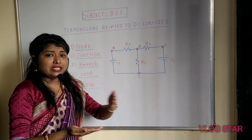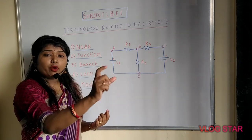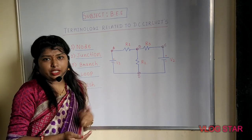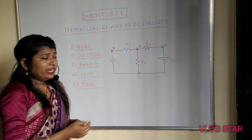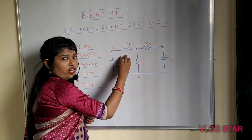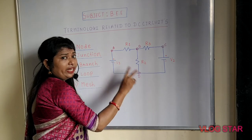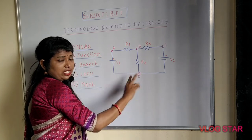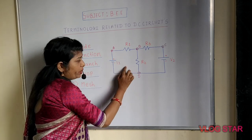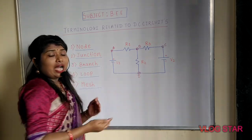What is the basic difference between loop and mesh? Mesh is one form of the loop which cannot be further divided into further loops. In this particular circuit, there are two meshes and three loops — this would be mesh one and this would be mesh two.